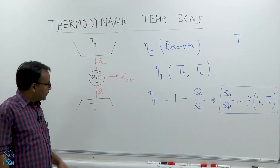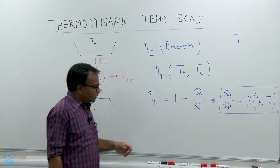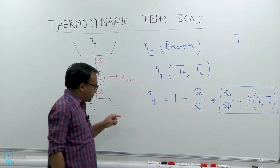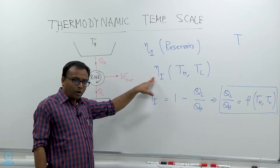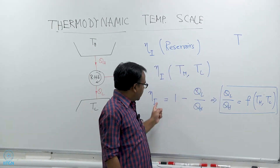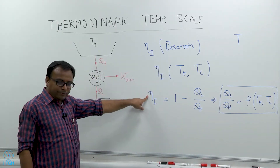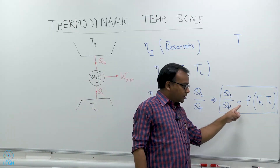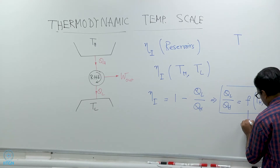This is only true for a reversible heat engine. What working fluid you are using or what process is going on does not matter. So Q_L/Q_H = f(T_H, T_L). Also, because we are saying that eta remains the same for all reversible heat engines, this function f will also remain the same for all heat engines — it is a universal function. We do not know exactly what it is, but it is universal.